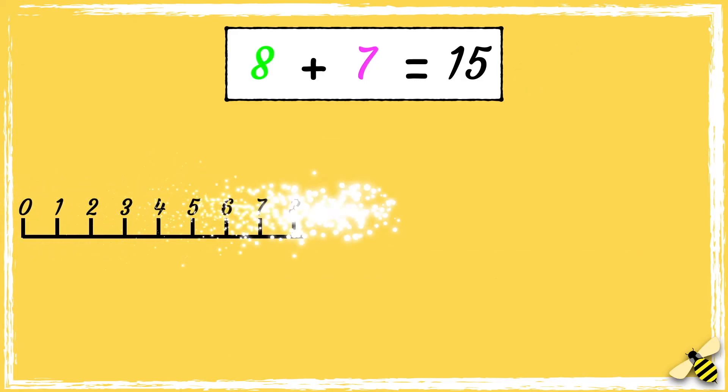For the next method, we'll use a number line to count on. We start from 8, and because we add 7, we need to jump 7 digits to the right: 1, 2, 3, 4, 5, 6, 7. I've landed on 15.